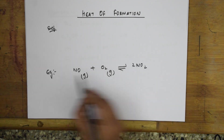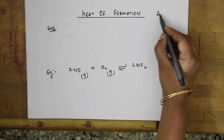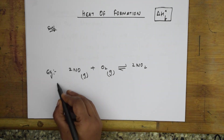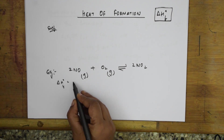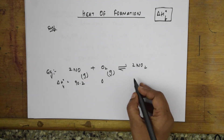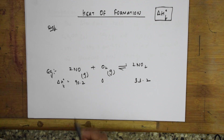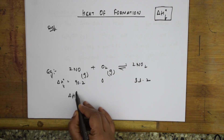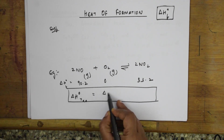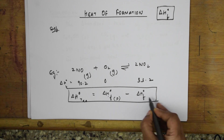The delta H value here — heat of formation — is denoted by delta H naught F. Delta H naught F for NO is 90.2; for oxygen, since it is a molecule, it is 0; and for NO2, delta H formation is 33.2. These are the reactants and this is the product. Now, if I have to write the delta H naught for the reaction, the formula is: delta H naught reaction equals delta H naught formation of products minus delta H naught formation of reactants.